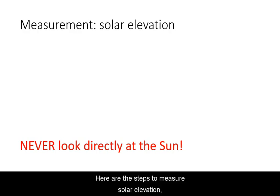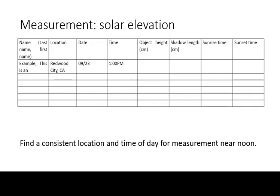Here are the steps to measure solar elevation throughout the year in an indirect way. First, you need to pick a consistent location and time of day for your measurements. This should be near noon. But if your schedule is prohibitive, then pick another time when throughout the week you can consistently make the measurements.